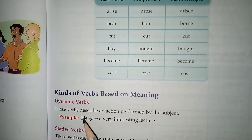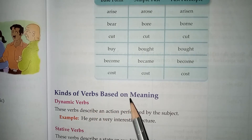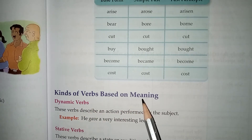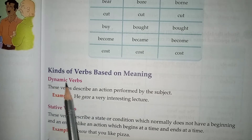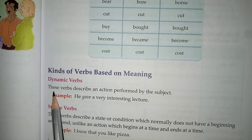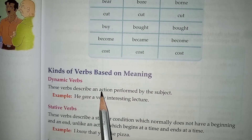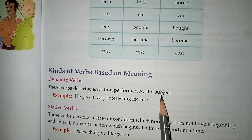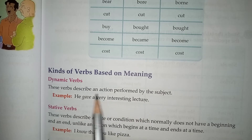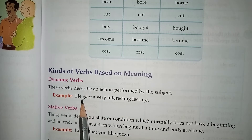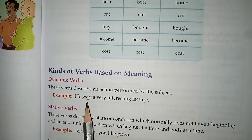Next, the topic is kinds of verbs based on meaning. The first kind is dynamic verbs. Dynamic verbs describe an action performed by the subject. For example: 'He gave a very interesting lecture.' Here the subject has performed an action.